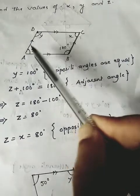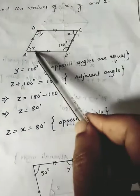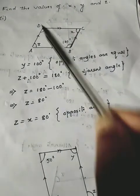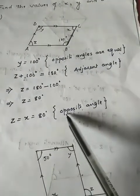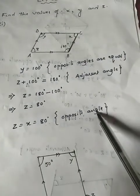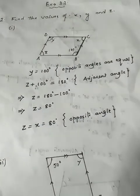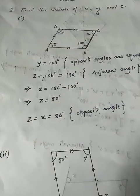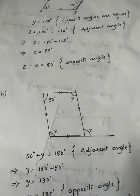Now x is just opposite to z, so if z is 80 degrees, then x is also 80 degrees — because opposite angles are equal. So z equals x equals 80 degrees. This is straightforward: you just need to know the property and observe the figure carefully. That is why parallelogram properties are extremely important — please familiarize yourself with all of them.